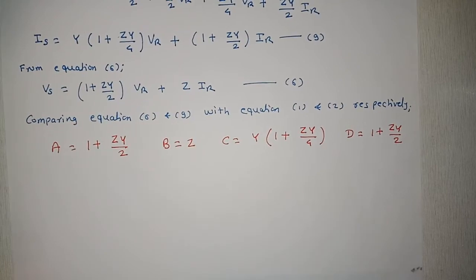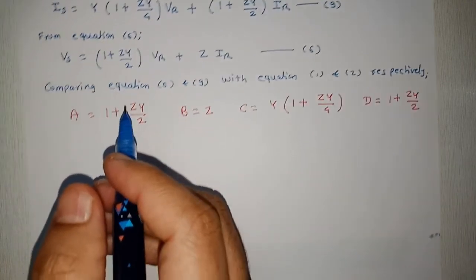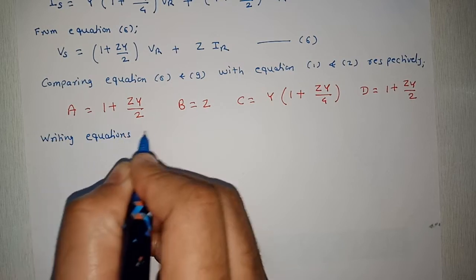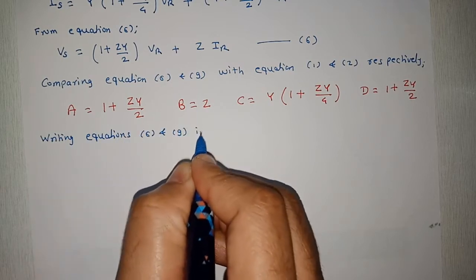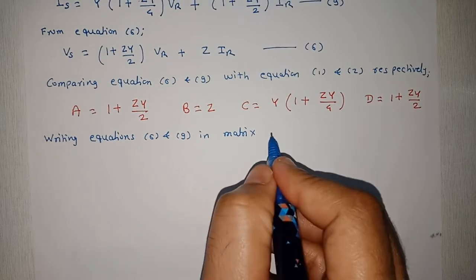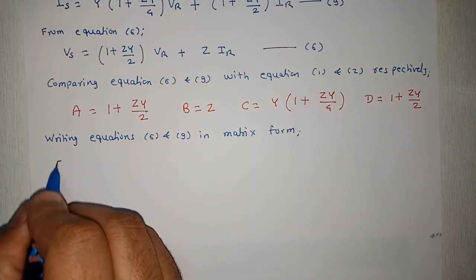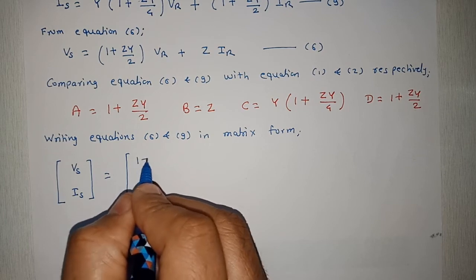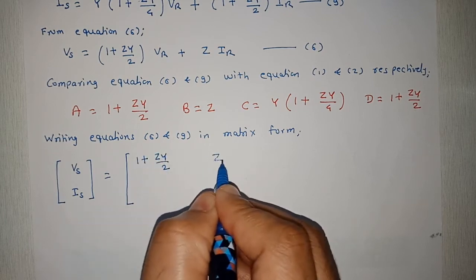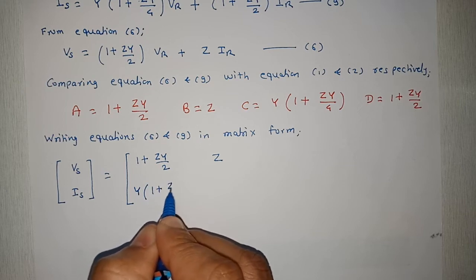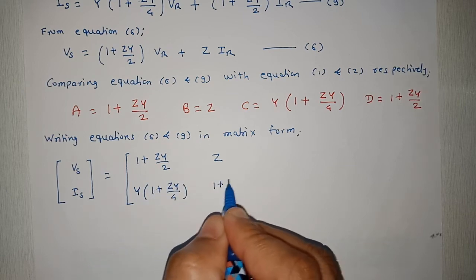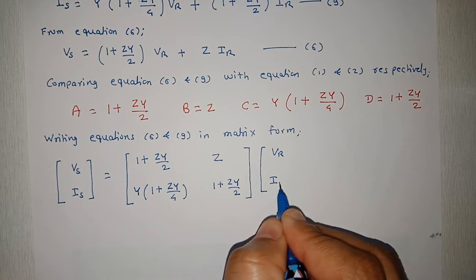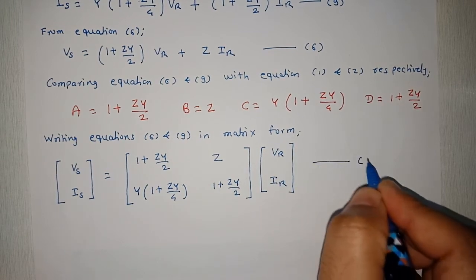We can also rewrite equations 6 and 9 in matrix form. Writing equations 6 and 9 in matrix form: [Vs; Is] = [(1 + ZY/2), Z; Y·(1 + ZY/4), (1 + ZY/2)] · [Vr; IR]. Let us call this equation number 10.